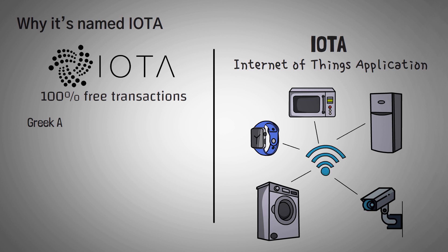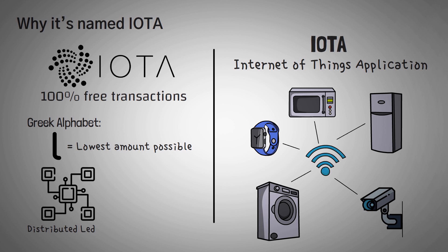In reality, IOTA was actually named for the 9th letter of the Greek alphabet, which stands for the lowest amount possible. IOTA is a distributed ledger that allows for very small transactions and data to be sent completely free. Let's dig into how it works.